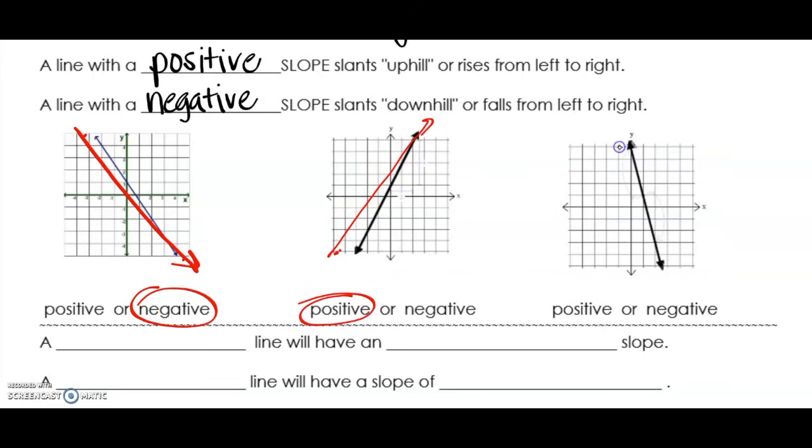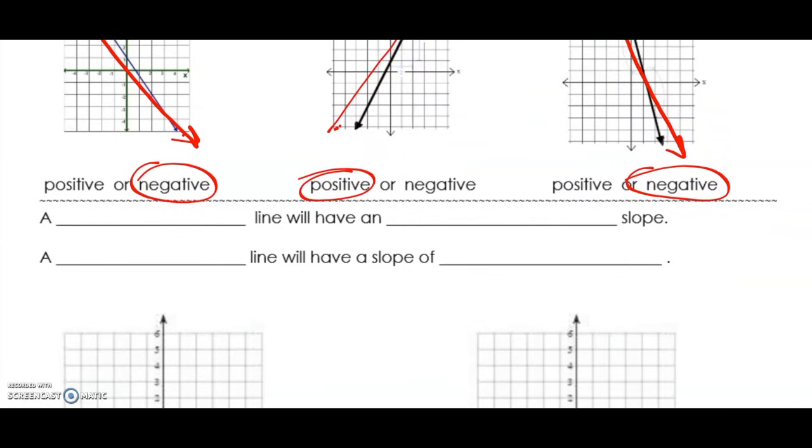In our last example, from the left side of the line to the right side of the line, it is decreasing, so that slope would be negative. Now let's look at vertical and horizontal lines.